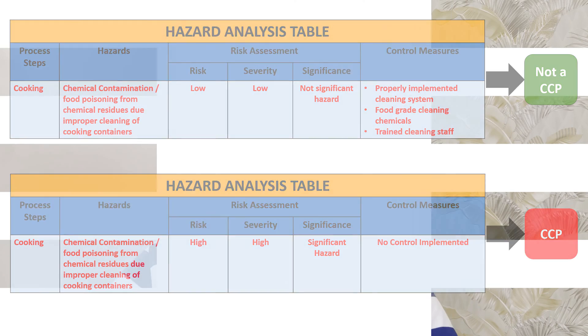If all hazards controllable by prerequisites become CCPs, the point of HACCP is lost. HACCP is a system that focuses management's attention on certain steps - the CCPs - so they can be controlled properly. If every step becomes a CCP, then every step is equal and HACCP loses its power.